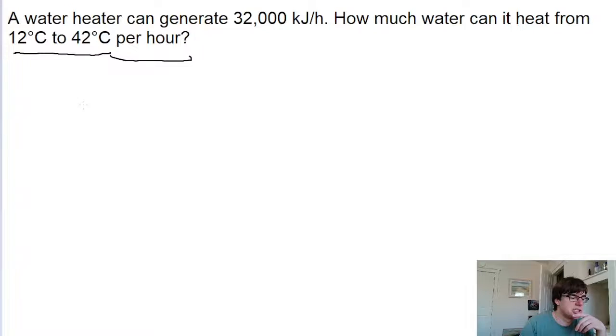So we take the amount of energy per hour that we're given, so that's 3.2 times 10 to the power of 7 joules per hour, and we divide that by the change in temperature.